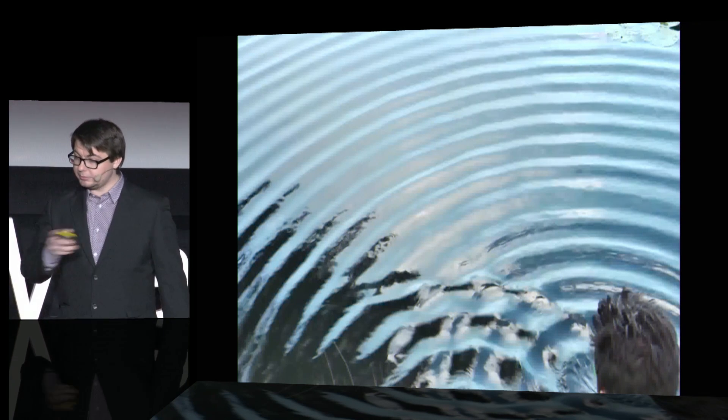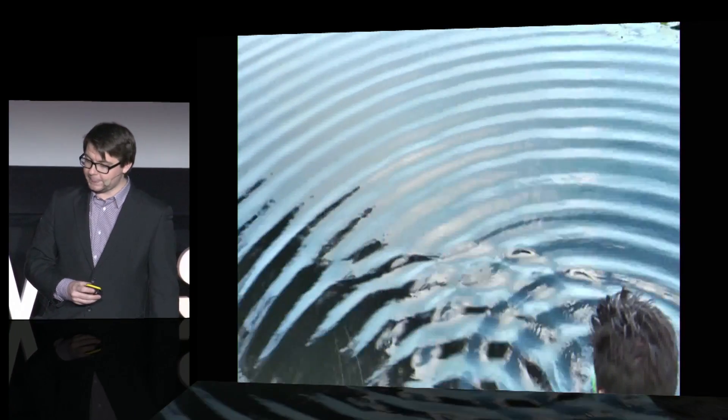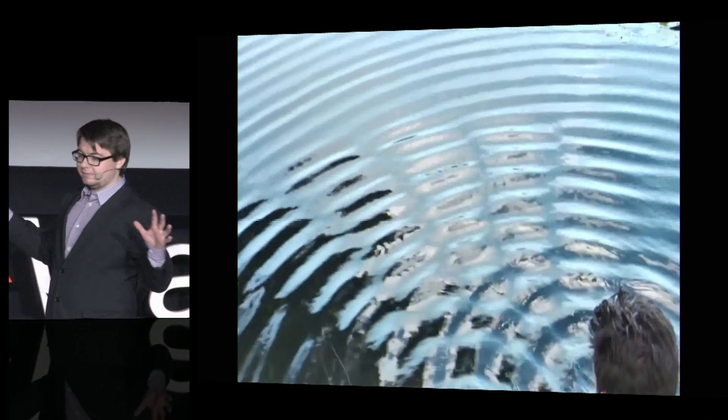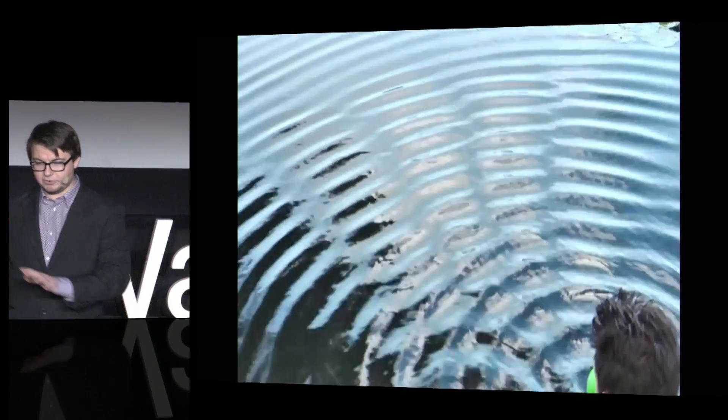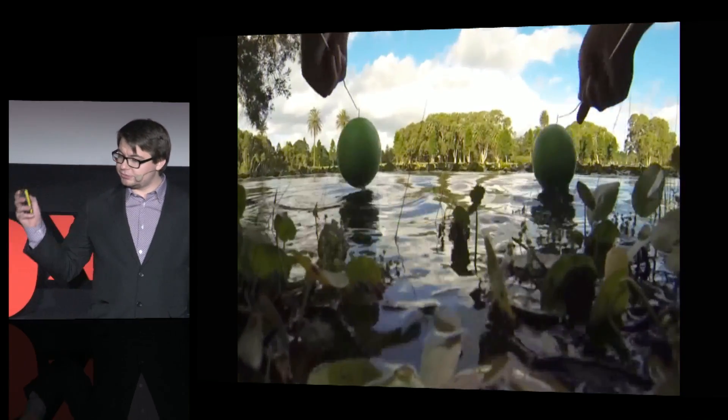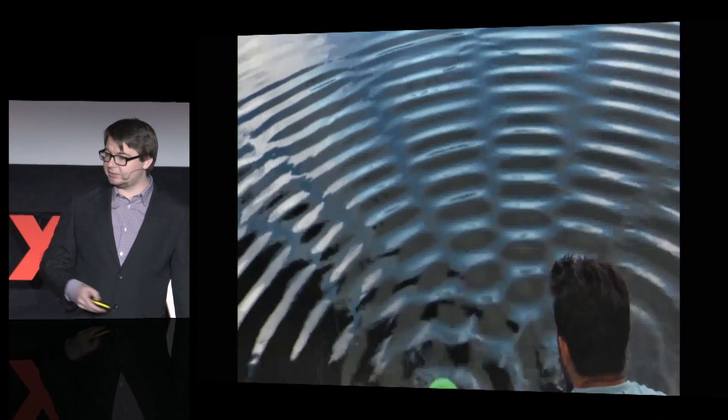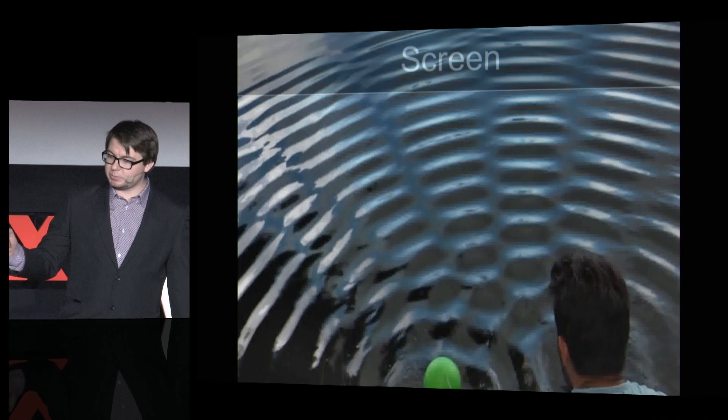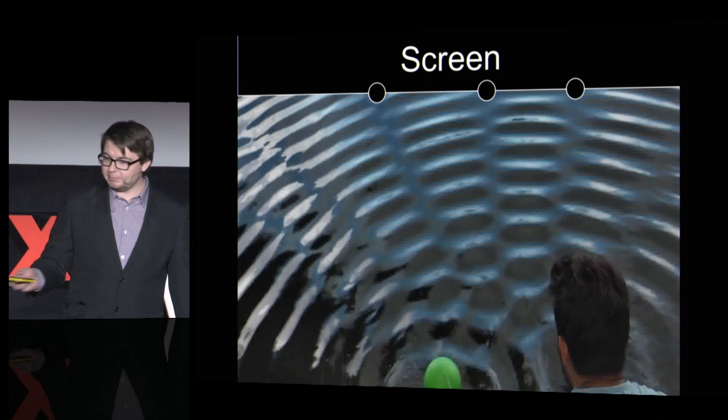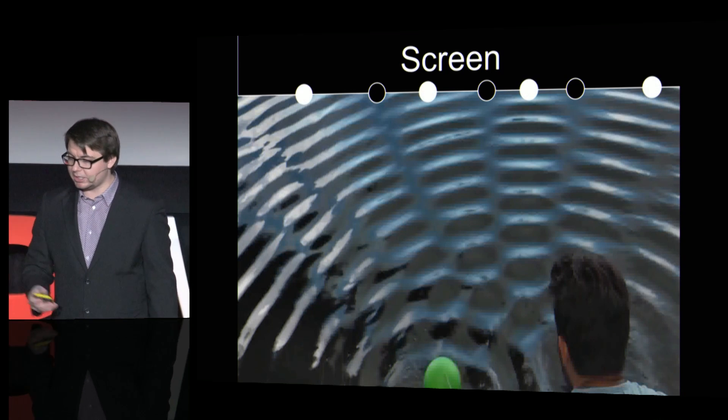If you make two ripples at the same time, you can see that these two waves overlap and form a certain pattern. You will soon realize that there will be some places where our water doesn't seem to move at all, and in some places, we have a large oscillation.